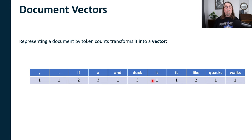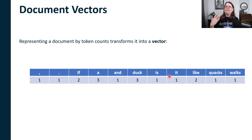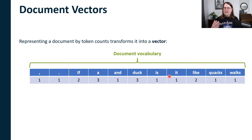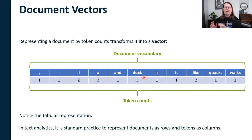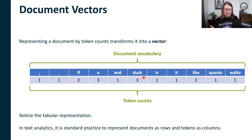Once we have our tokens, we can create what's known as a document vector. For our example document — 'If it walks like a duck and quacks like a duck, then it is a duck' — each unique token becomes a column, a feature. This is our document vocabulary. We go through all the tokens and count them up: one comma, one period, three 'a's, three 'ducks', one 'quacks', and so forth. This is known as a document term matrix, where every row is a document and every term becomes a column. This is also known as the bag of words model.